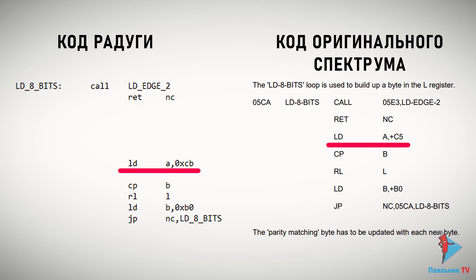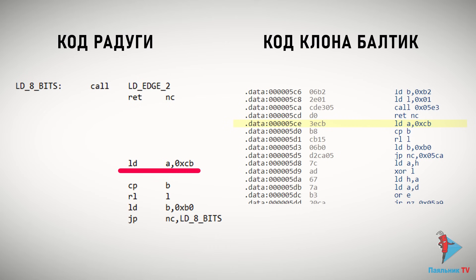Насколько я понял, это некоторый период ожидания. В «Радуге» он был немного больше, и это логично, ведь «Радуга» работает на частоте 4 МГц взамен стандартной частоты спектрумов 3,5 МГц. Кстати, если посмотреть на прошивку от компьютера Baltic, который тоже работает на 4 МГц, то в программе загрузчика там тоже стоит CB вместо C5. Говоря простыми словами, загрузчик «Радуги» — это просто вырезанный стандартный загрузчик из прошивки Baltic, который в бесконечном цикле пытается загрузить программу и если что-то идёт не так — перезапускается.